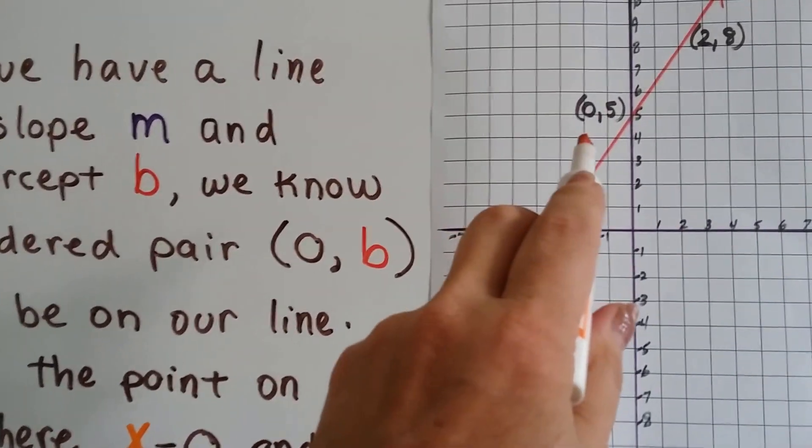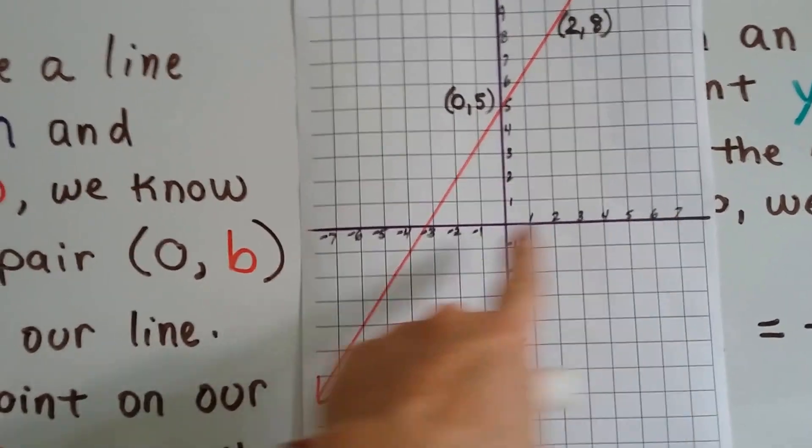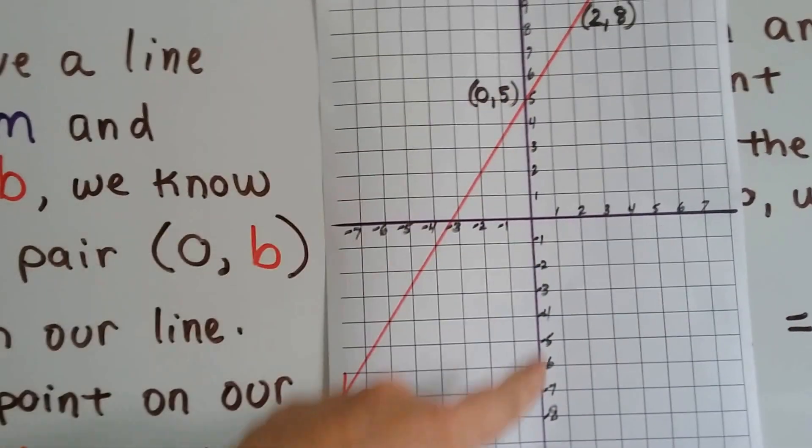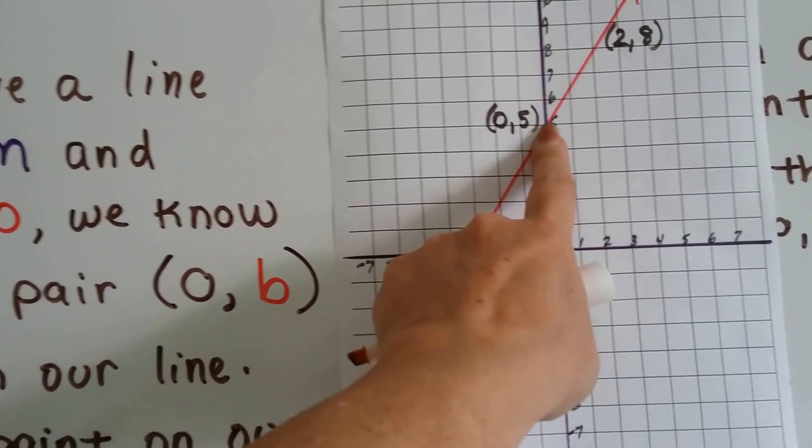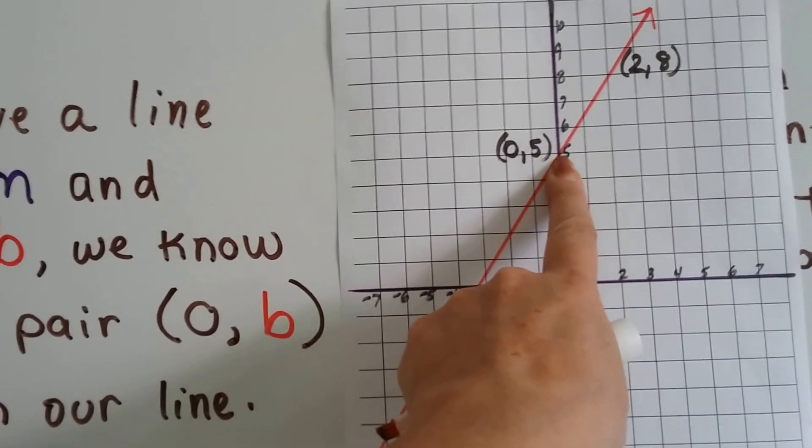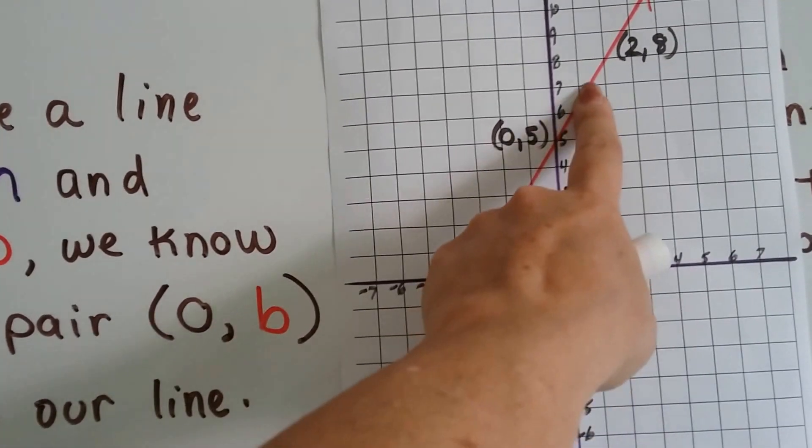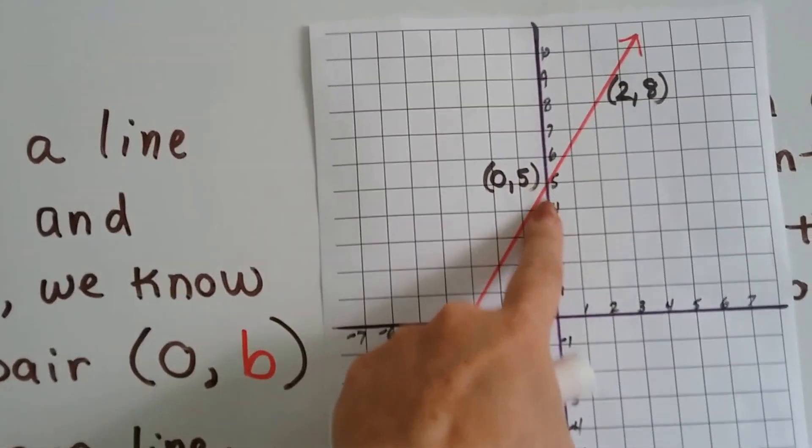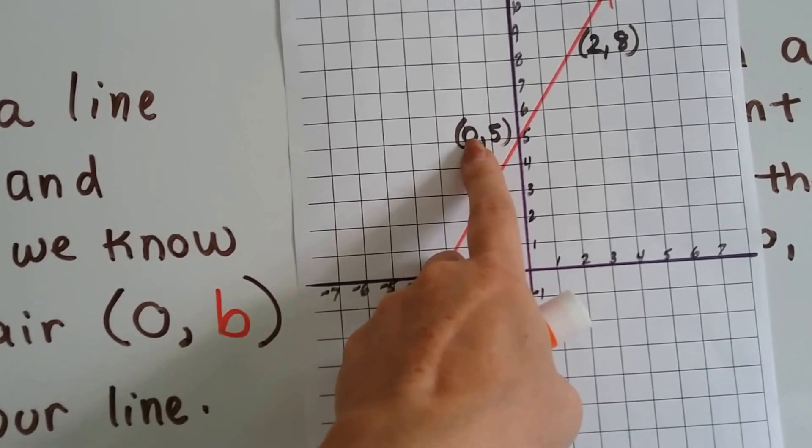So for here, x has got to be 0. Because here's the x and here's the y. So x is on 0, and on this one the line hits it right here at the 5. That's the y-intercept. It's where the red line crosses the y-axis. And it does it at 5. So our coordinates are (0, 5).